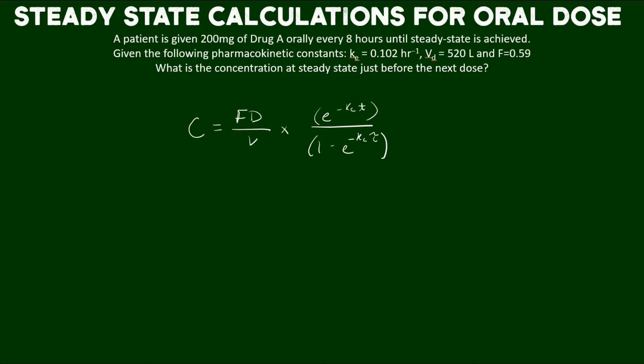The equation has bioavailability, dose, and volume of distribution on the left side. On the right side, it has the multiple dosing factor — which includes the exponential to the negative elimination rate constant times time — over 1 minus the exponent of the negative elimination rate constant times tau, which is the dosing interval.